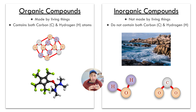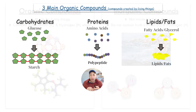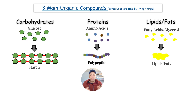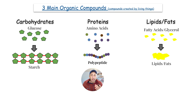There are three main groups of organic compounds — compounds created by living organisms. They are carbohydrates, proteins, and lipids/fats.